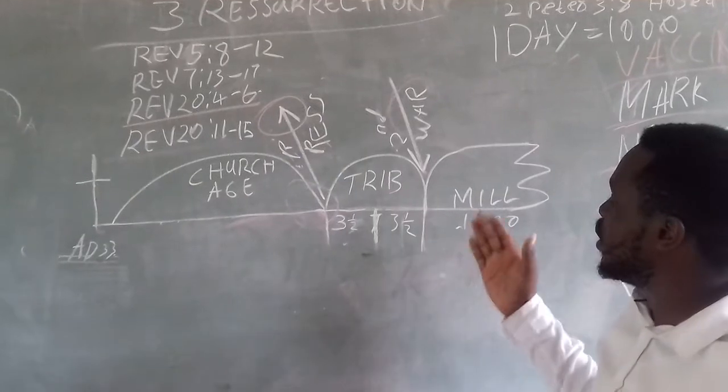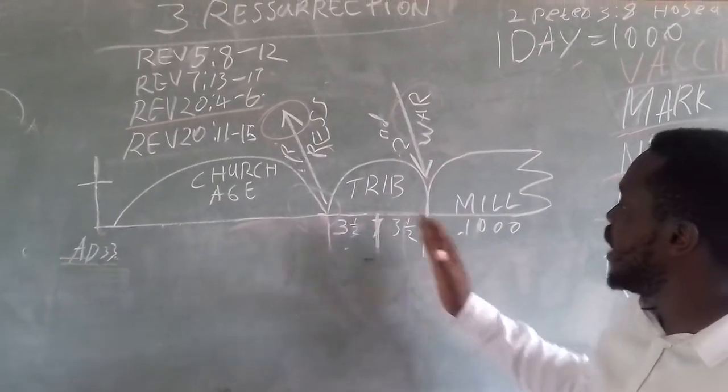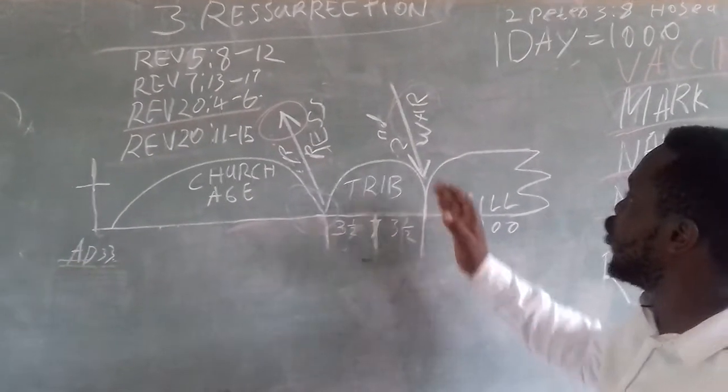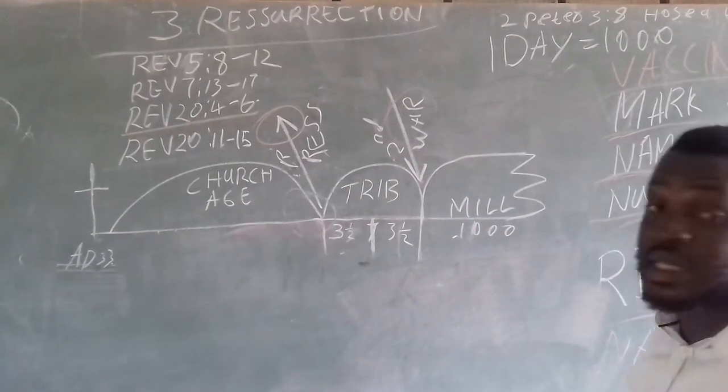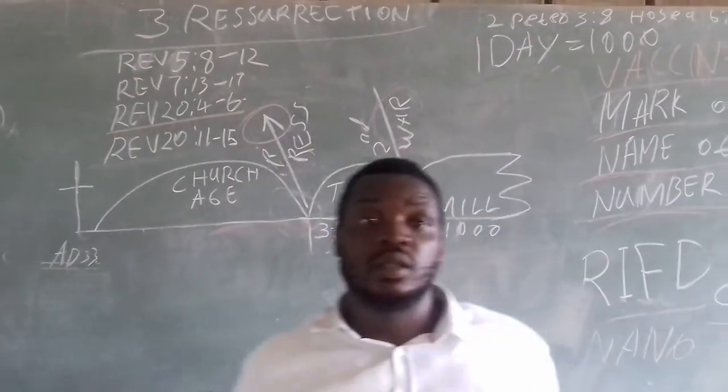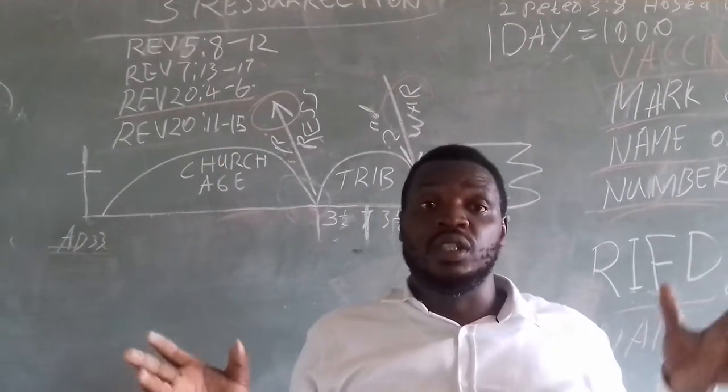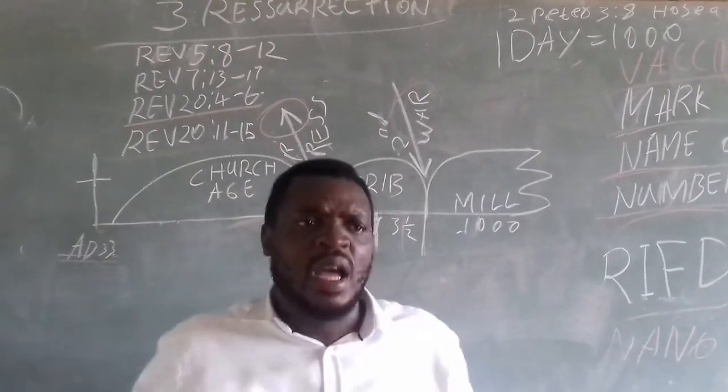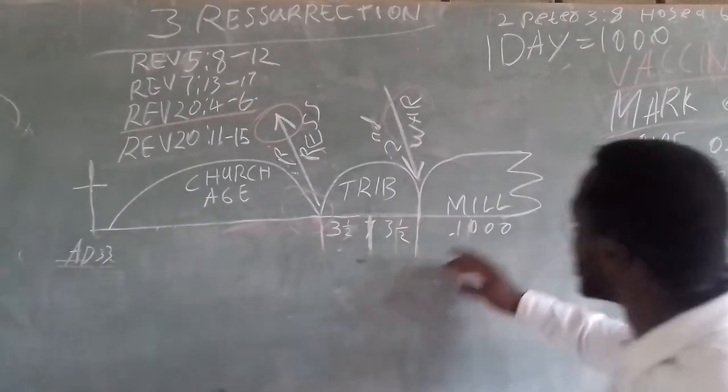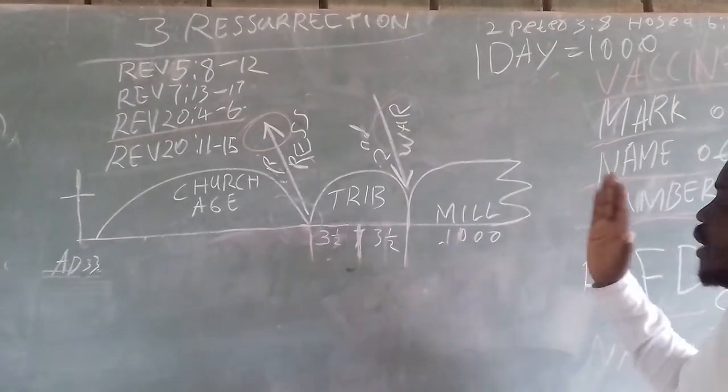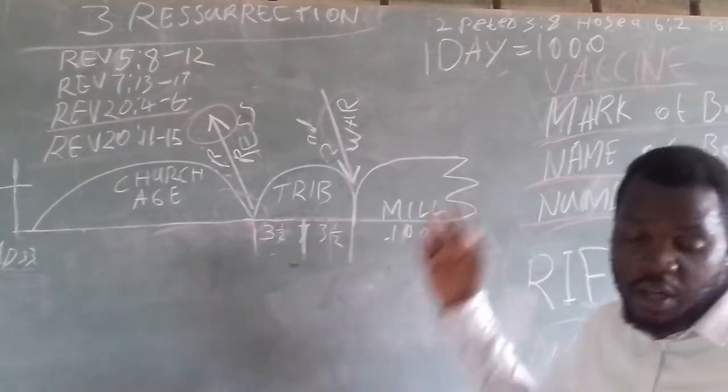Then on the second coming when he is coming back, those who have died during seven years tribulation, they will be resurrected here. Then we have another group. This is everybody who have not believed. Everyone who have not believed and they have died, they are going to be resurrected after one thousand years. Let me read it for you.